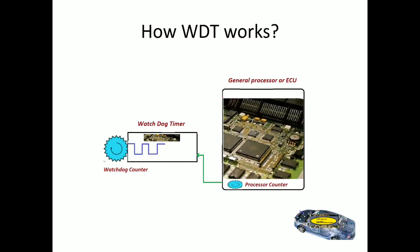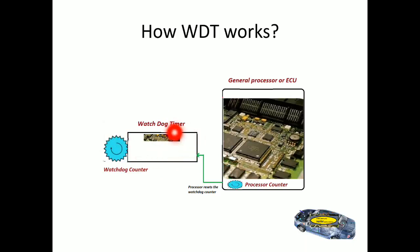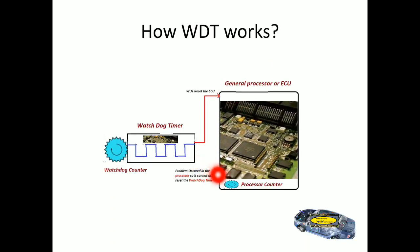If the ECU is working fine, it keeps resetting the watchdog timer count value. But if the ECU is not working fine, it cannot send the reset signal to the watchdog timer. At that point the counter counts increment, and once the count reaches its limit it sends a reset interrupt to the processor. Because the ECU is not working properly, the count increases, triggering a reset of the entire ECU so it starts from the beginning.